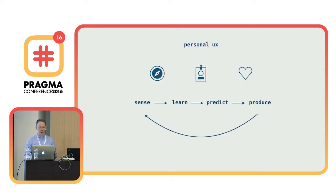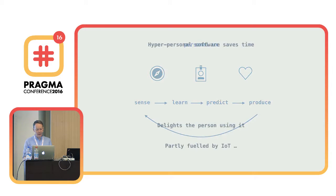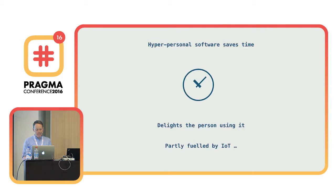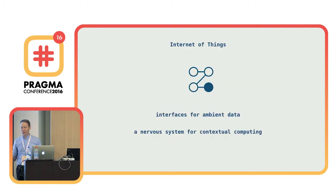What I'm hinting at is contextual experience — hyper-personalized experience that understands your location, your health, your emotions — software that adapts to you personally through learning. It gives you a personal user experience, and it's a feedback loop: it senses, it learns, it uses what it learns to predict what is going to be helpful to you, produces that experience, senses how you've worked in that experience, and keeps learning and evolving. For me, the Internet of Things are interfaces for ambient data — it's less about the gadgets than the ways they can sense and detect what you're doing. It's a nervous system for contextual computing.